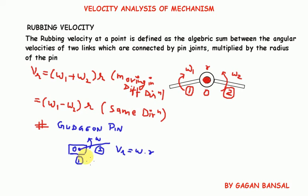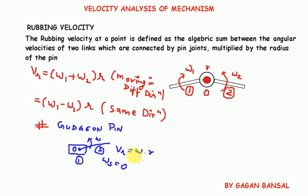The reason is that the slider has pure prismatic movement, that is sliding movement, so its angular velocity is zero. Since the rubbing velocity formula is omega one plus omega two into r, and one of the angular velocities is zero, the rubbing velocity simplifies to omega into r.